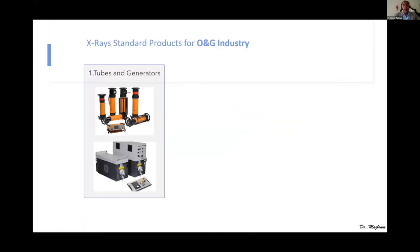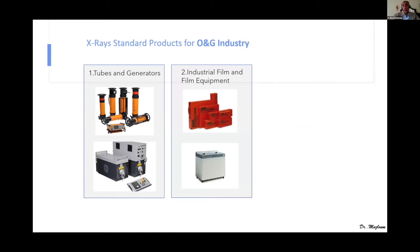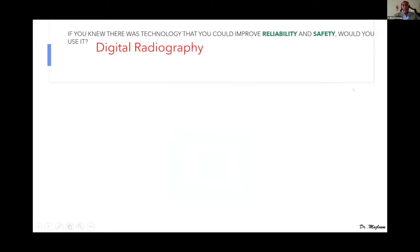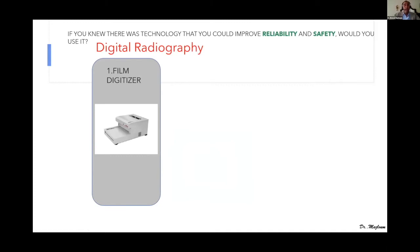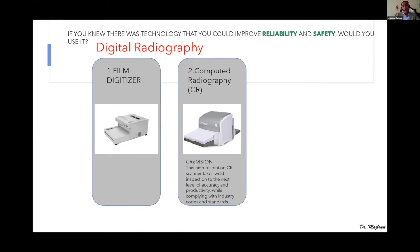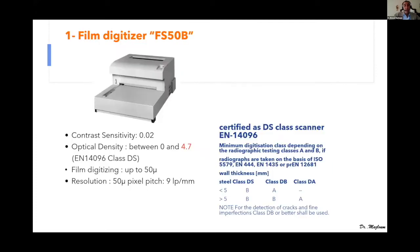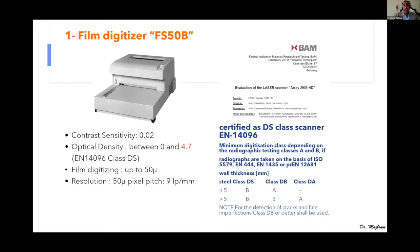Moving to the oil and gas industry — many people are very interested in this area. As we all know, we use conventional tubes and generators with standard film and different developers and dryers. But now we are focusing on digital radiography. Digital radiography is displayed across film digitizer, computerized radiography (CR), and digital detector array (DDA), as my colleague Mr. Chirpal highlighted. Film digitization provides different contrast sensitivity, optical density, and resolutions according to codes and standards.